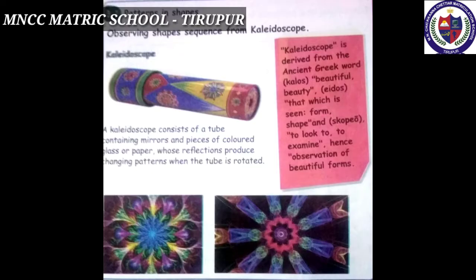Observing shapes sequences from a kaleidoscope — see the picture. The word 'kaleidoscope' is derived from ancient Greek: 'kalos' means beautiful beauty, 'eidos' means that which is seen — form or shape — and 'skopio' means to look to, to examine. Hence, it means the observation of beautiful forms.